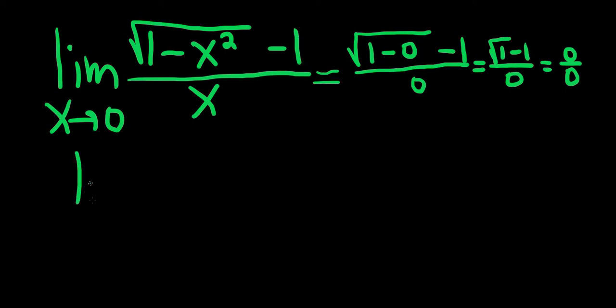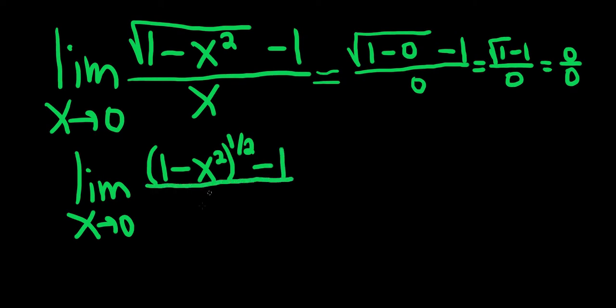Before we do that, we should rewrite this in a way that allows us to take the derivative. Let's rewrite the square root as (1 minus x squared) to the 1 half. We still have the minus 1, all being divided by x.